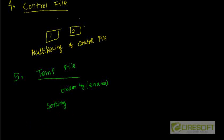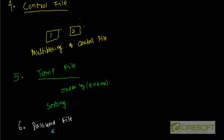Number six is the password file. The password file is used to authenticate users performing administrative tasks over a network. That means instead of logging into the machine directly, if you connect from another machine over a network such as Telnet, you need a password file to authenticate that remote user so they can perform administrative work like starting or shutting down a database.